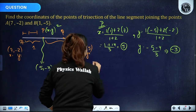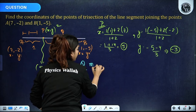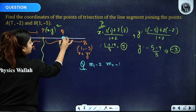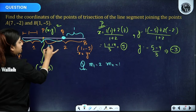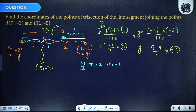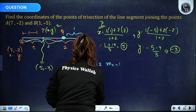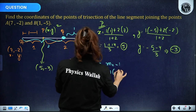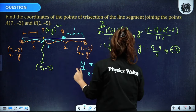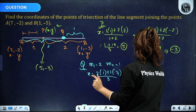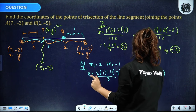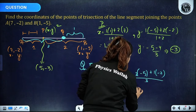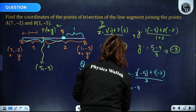For point Q (ratio 2:1): x = (2×1 + 1×7)/3 = 9/3 = 3; y = (2×(−5) + 1×(−2))/3 = −12/3 = −4. So the coordinates of Q are (3, −4).